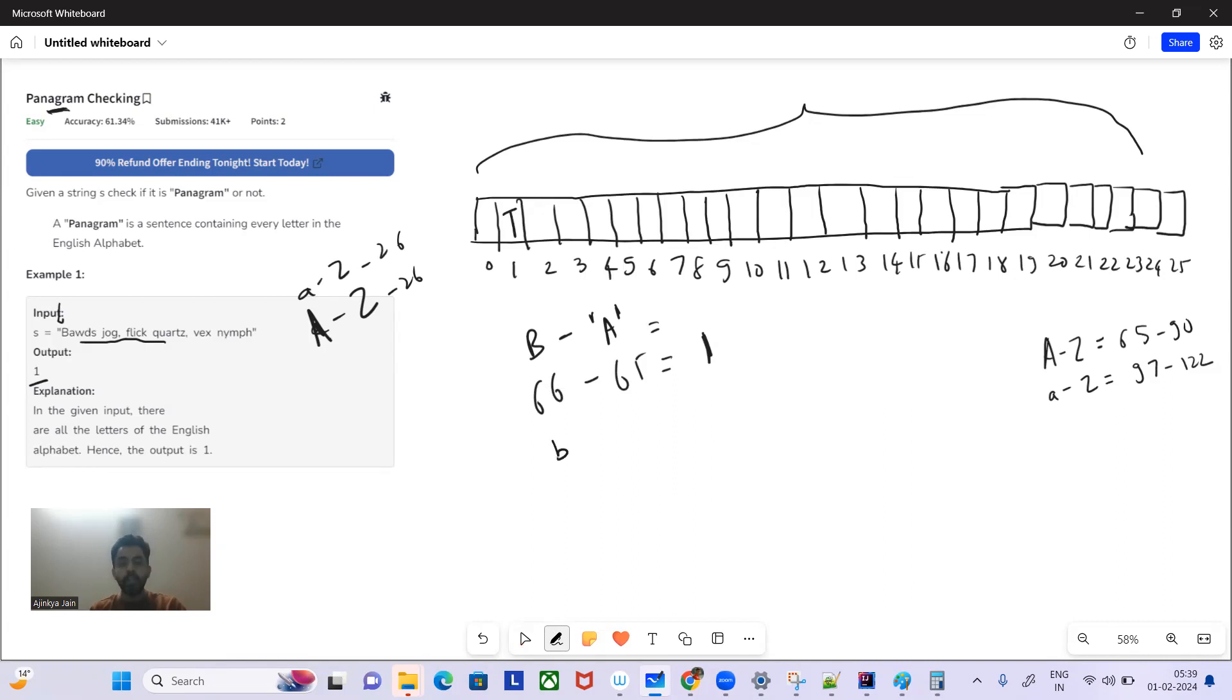If it is small b, the character is small b, then in that case we are going to deduct the ASCII value of small a. So what is ASCII of small b? Small b is 98 and small a is 97. So it is going to be the same index 1, so we are going to mark it as true.